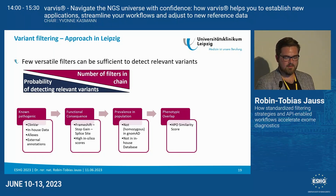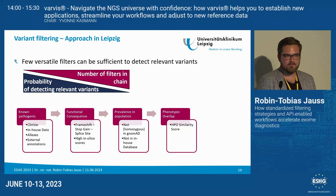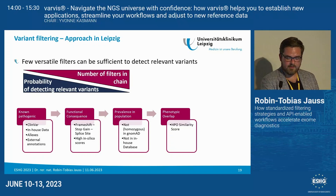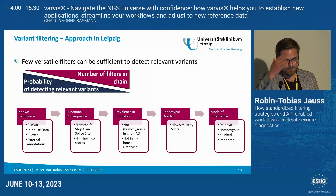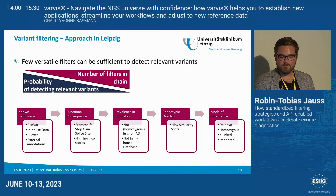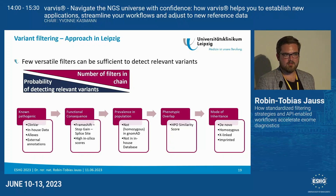It is also important to filter for phenotypic overlap. A variant might be described as pathogenic and rare in the general population, but if there is no phenotypic overlap, it may obviously not be relevant for your patient. The last filtering step is to take into consideration the mode of inheritance — especially de novo variants, homozygous variants, or variants in genes with an imprinting mechanism.